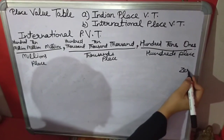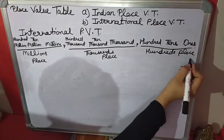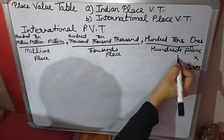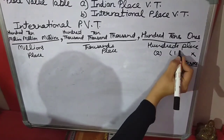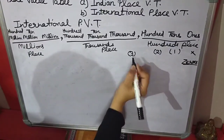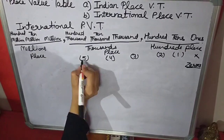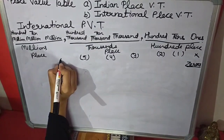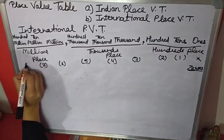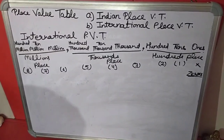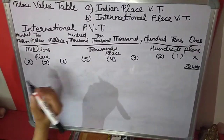Now we will talk about zeros in the International system. In Ones there is no zero; in Tens one zero; in Hundreds two zeros; in Thousands three zeros; in Ten Thousands four zeros; in Hundred Thousands five zeros; in Millions six zeros; in Ten Millions seven zeros; and in Hundred Millions eight zeros. Now we will take one example.